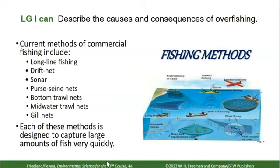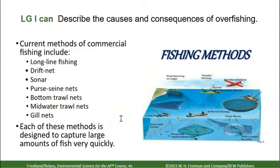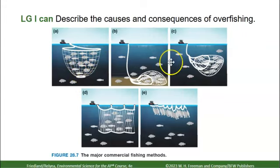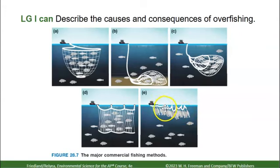Current fishing methods that can cause fisheries to collapse include longline, drift netting, sonar, purse seine nets, bottom trawl, midwater trawl, and gill nets. Each of these methods is designed to capture very large amounts of fish quickly. Longline fishing, used for tuna, involves a long line with many hooks.